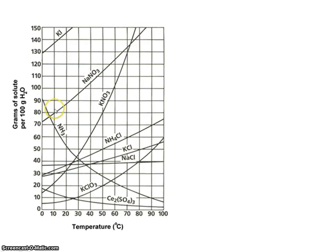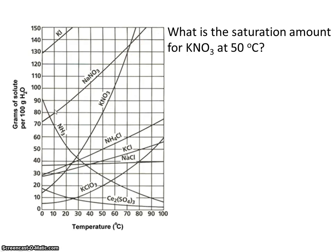The lines are the saturation amounts. So here we go. What is the saturation amount for potassium nitrate at 50 degrees C? Well, here's potassium nitrate, and here is 50 degrees C. Let's use basic graph reading technique. Let's go up and over. We see where we hit the line, it's about 80. So that's 80 grams of solute will dissolve in 100 grams of water.